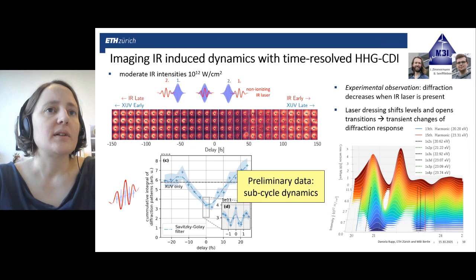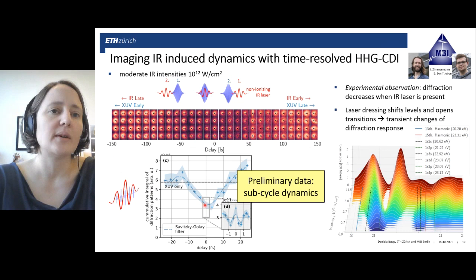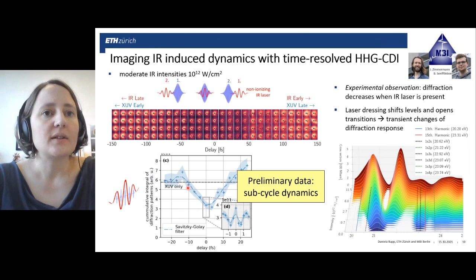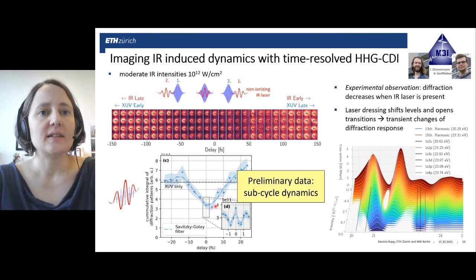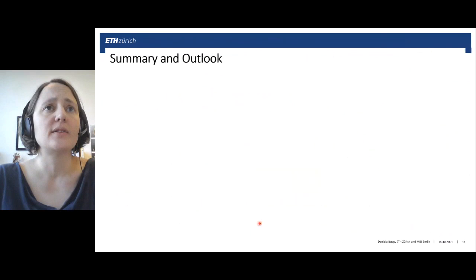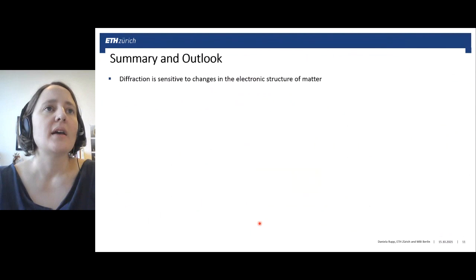In a very recent experiment — showing only preliminary data — the experiment was repeated with much better timing conditions: an IR pulse of ~8 femtoseconds and a correspondingly shorter XUV pulse with high timing stability. A decrease of ~30% in intensity was observed in the overlap region. A fine scan in the overlap region even revealed sub-cycle dynamics or a 2ω oscillation.